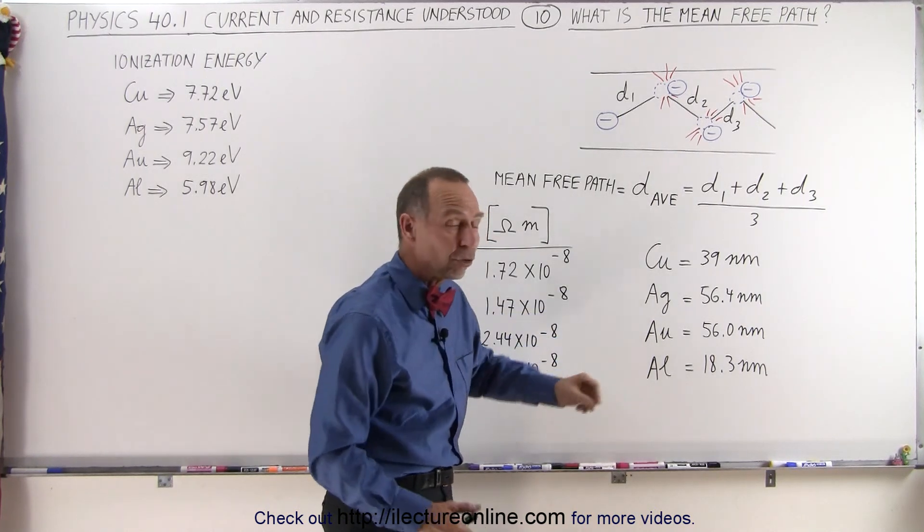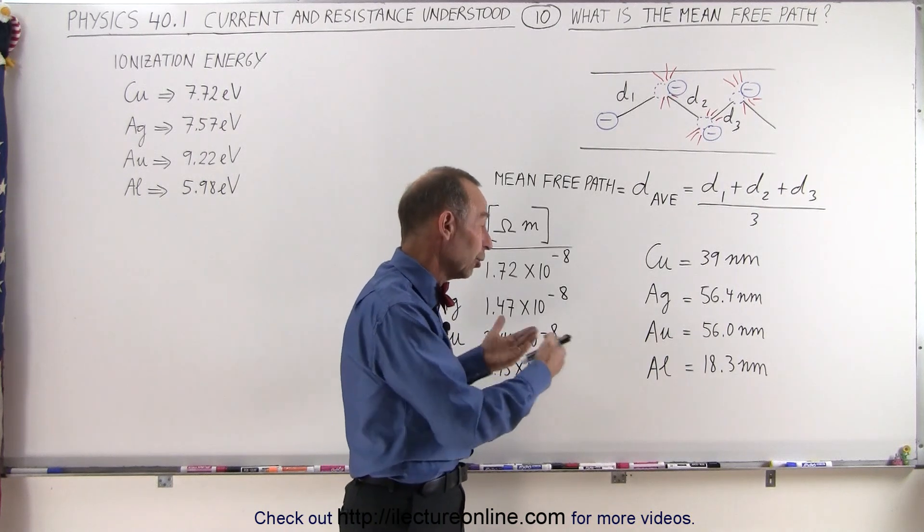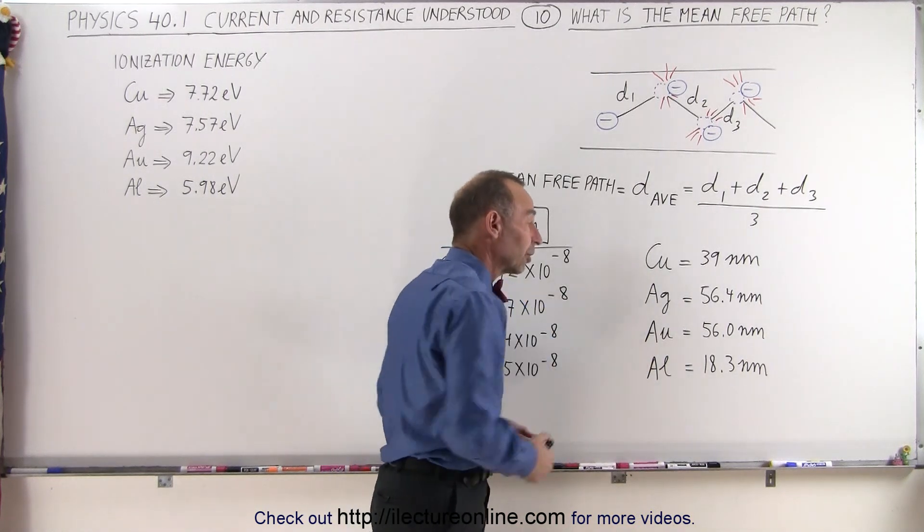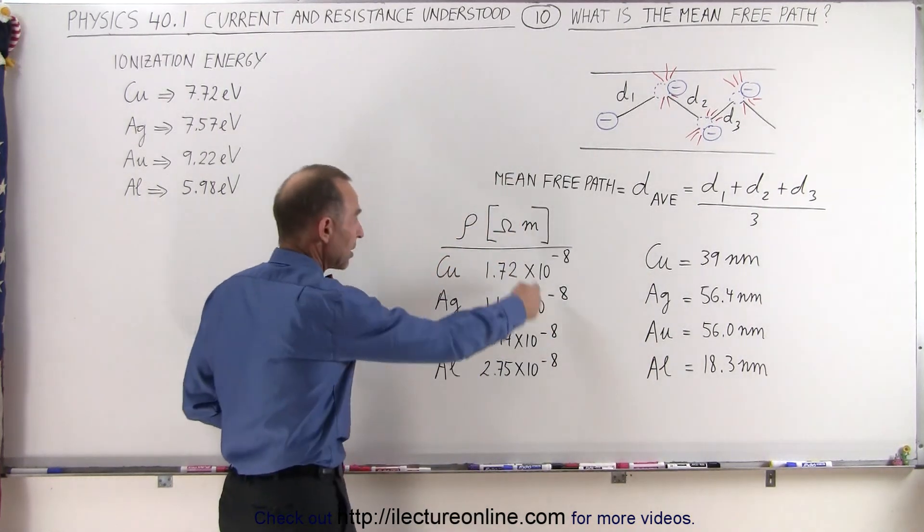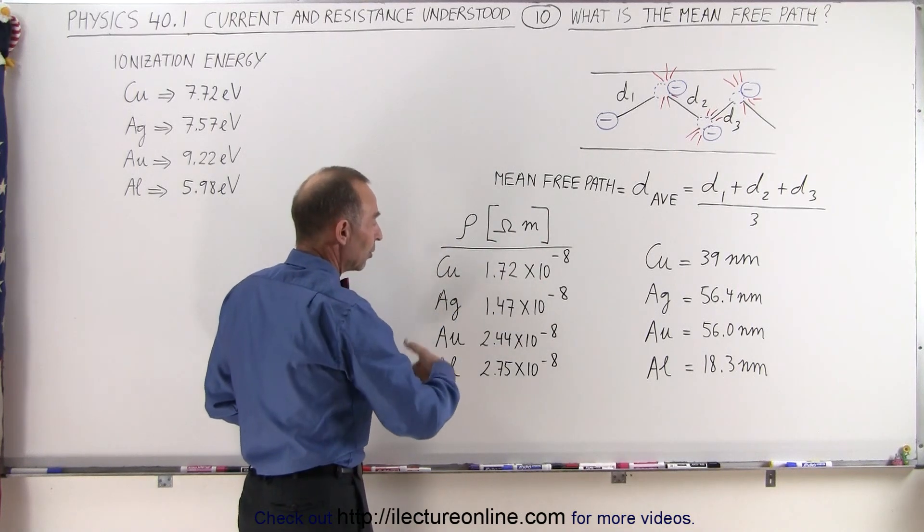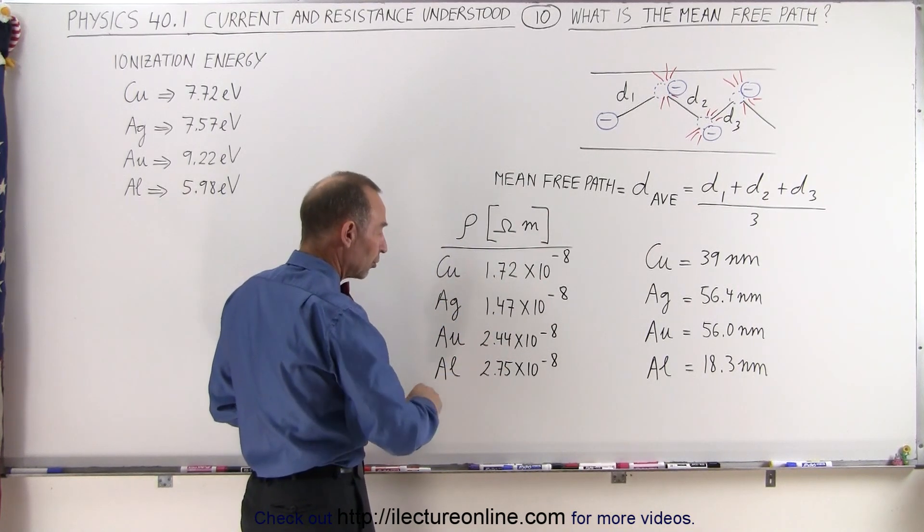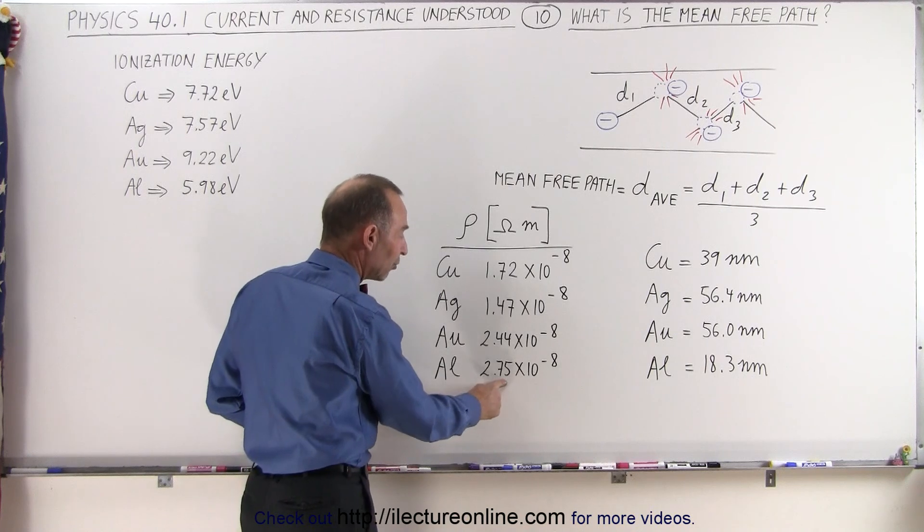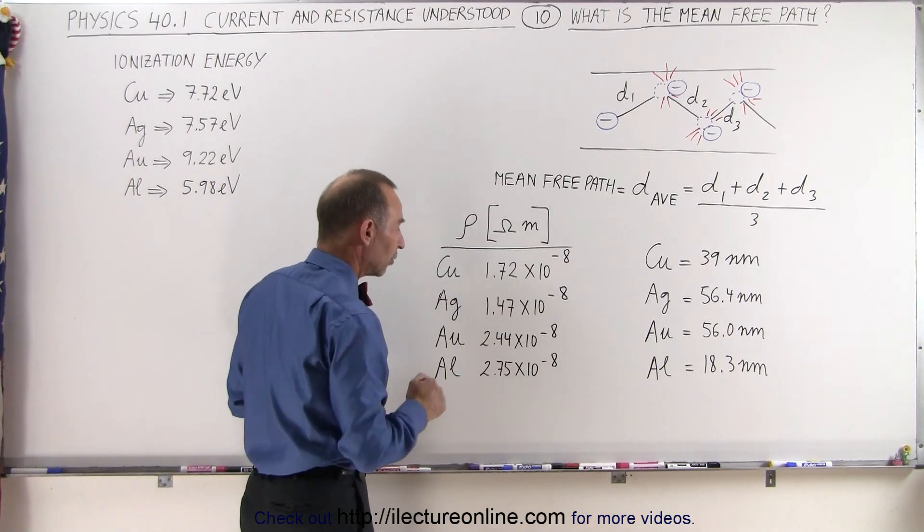Notice aluminum has the shortest path, so therefore by that alone you should say that aluminum is probably the worst of the four conductors. And if you take a look here at the resistivity, greater resistivity means a poorer conductor. Aluminum does have the highest resistivity, is therefore the poorest of the four conductors.